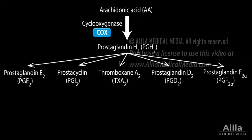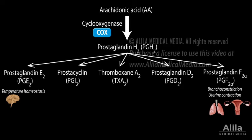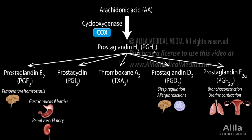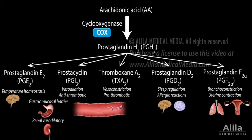Physiological prostaglandins act to maintain local homeostasis such as temperature regulation, bronchial tone, uterine tone, and gastric mucosal barrier, among others. Some prostaglandins exert opposing effects to maintain balance. For example, platelet TXA2 constricts blood vessels and promotes platelet aggregation, while endothelial PGI2 dilates blood vessels and inhibits platelet aggregation. Together, they modulate the interaction between activated platelets and the blood vessel wall.